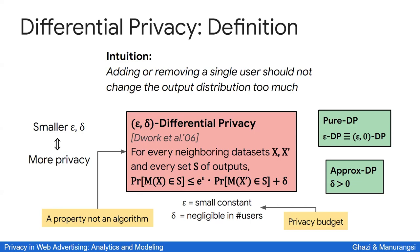To clarify: δ should be negligible in terms of the number of users, meaning much less than 1/n. For example, with 10 million users, you might set δ to 10⁻⁹ or 10⁻¹⁰.